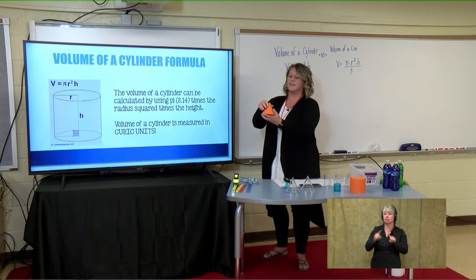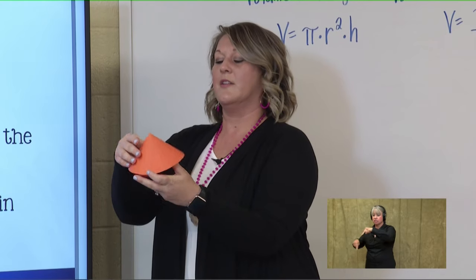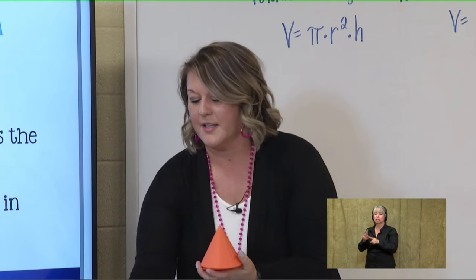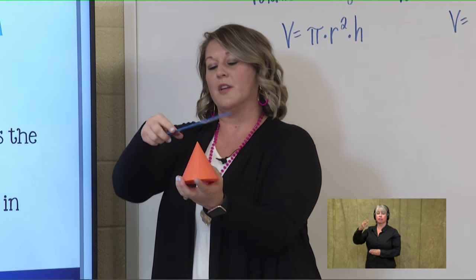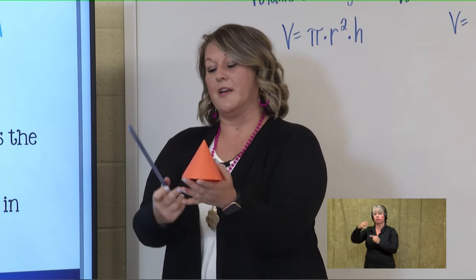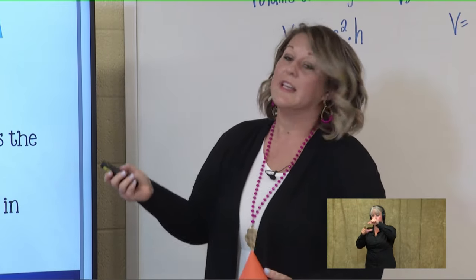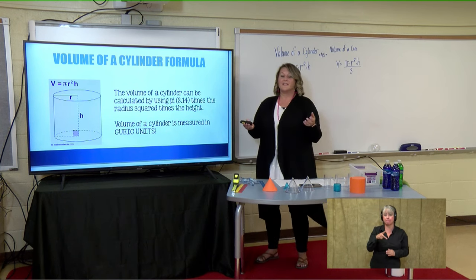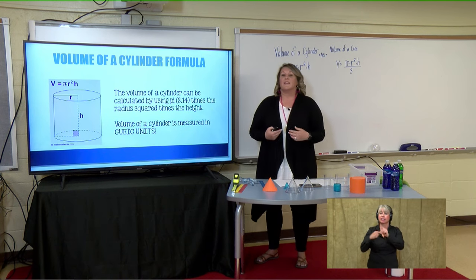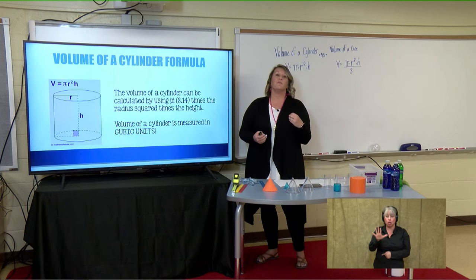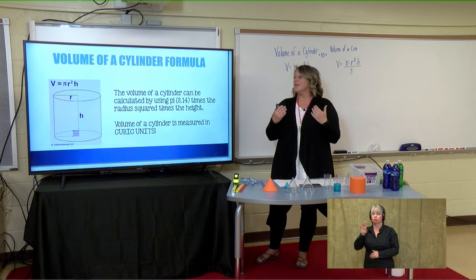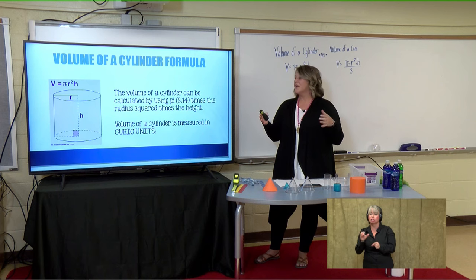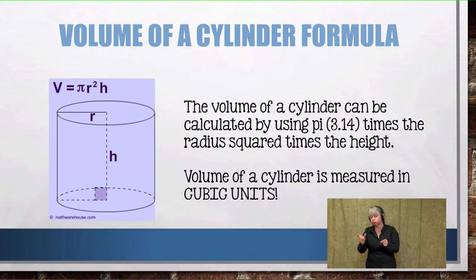The cone net is similar — it has a circular base, and if we open it up, it has little triangles that create its height. It's a slanted height, but you can also measure from the top of the apex down to the bottom of the base. The volume of a cylinder can be calculated using pi. For all the examples today, we're going to approximate pi as 3.14.